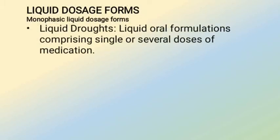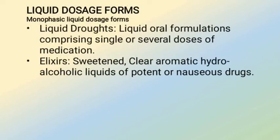Another need is to provide introduction of medication into the body's orifices — for example, rectal and vaginal suppositories. Now moving to the various dosage forms: starting with monophasic liquid dosage forms, the first is liquid draughts, which are liquid oral formulations comprising single or several doses of medication.